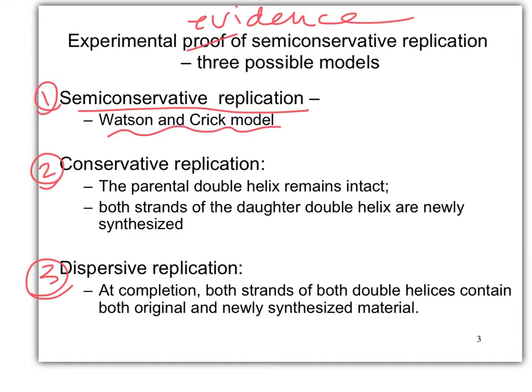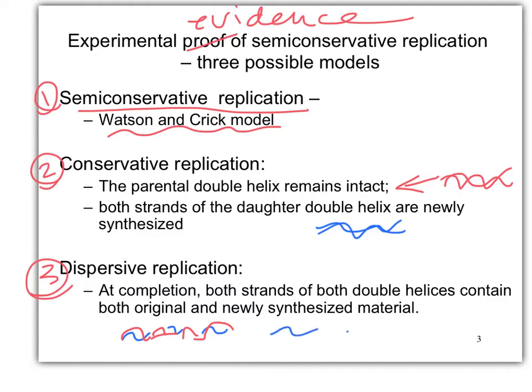Conservative replication is where the original templates stay together and the new helix is a new helix — two new strands, two old strands. Dispersive replication: at the completion, both strands contain both original and newly synthesized material, so there are little parts of each — parts of template and parts of new strand mixed together.